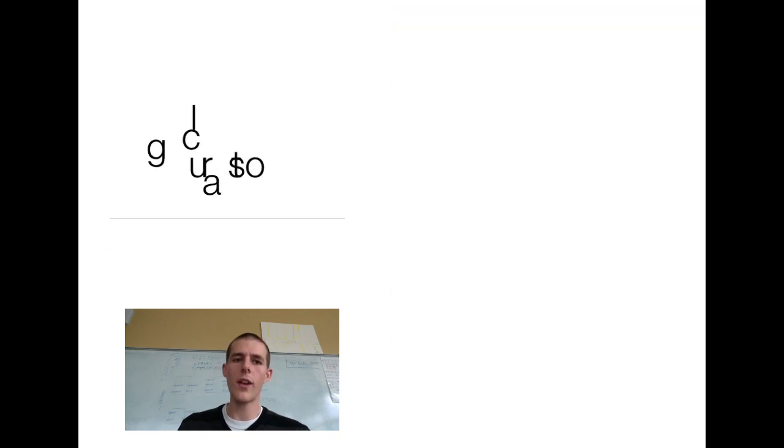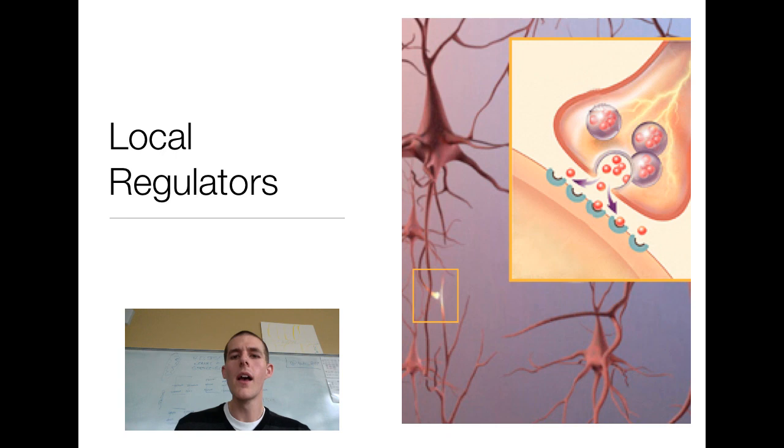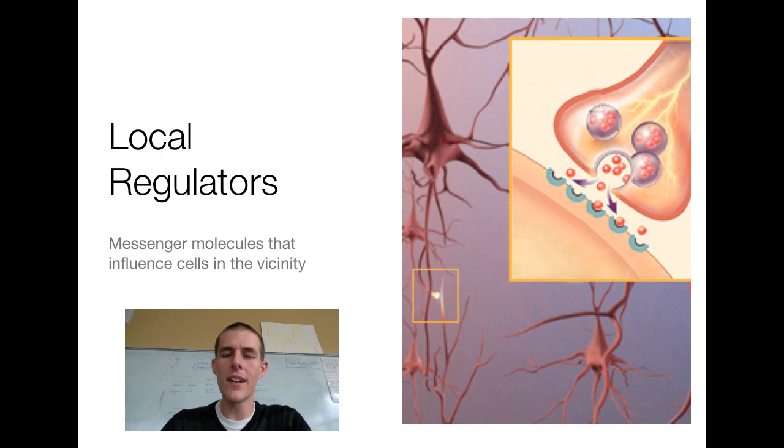And then your last vocab word, actually, I don't know if it's the last one, but a local regulator, another word you need to know, this is just a messenger molecule that influences cells in the vicinity. All right. Now, by the vicinity, I mean cells that are only one to a couple cells away. And it's going to be a molecule that has an effect directly on those cells.